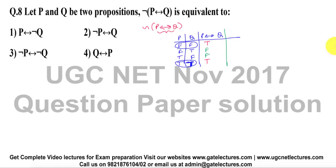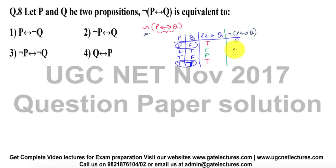When I take the complement of this — that means the complement of P double implication Q — the truth values become: false, true, true, and false.